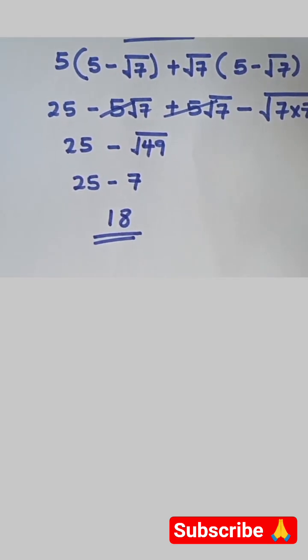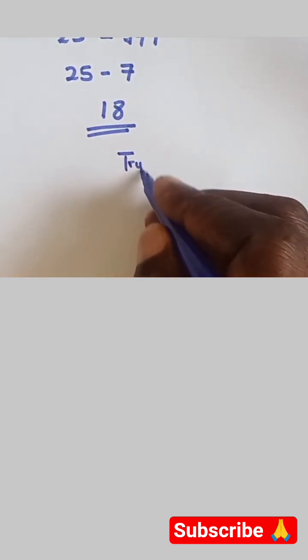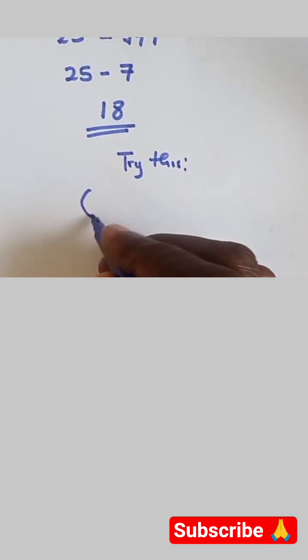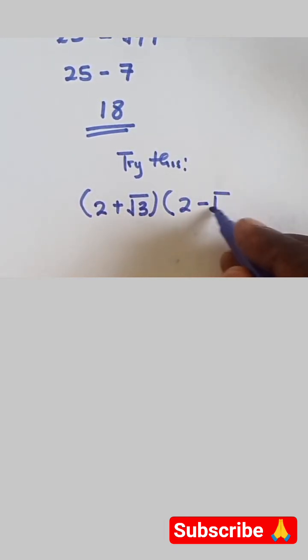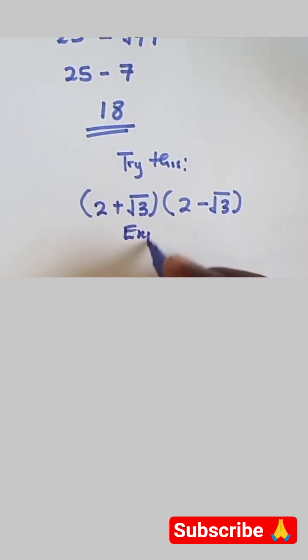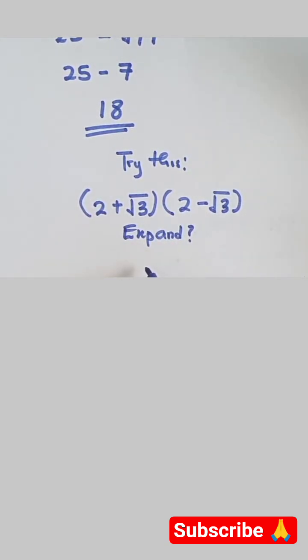Right, so let's do something similar to that. Let's try this: we have (2 + √3)(2 - √3). You have to expand that.